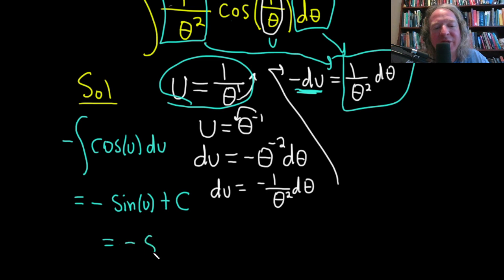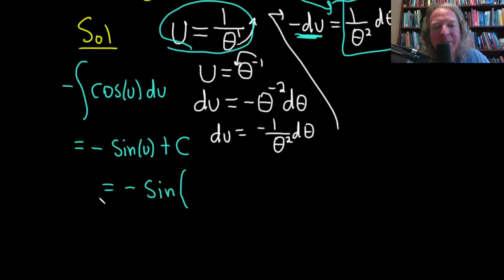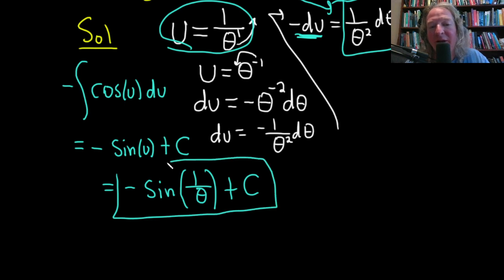So this is negative sine of 1 over theta plus our constant of integration, capital C. And that would be the answer.